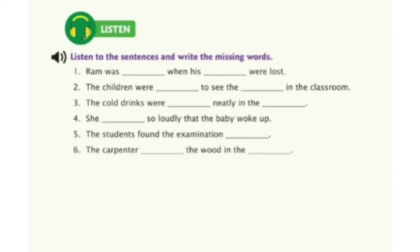Chapter name: Treasure Map. Listen to the sentences and write the missing words. One: Ram was young when his ice skates were lost. Two: The children were excited to see the movie in the classroom. Three: The cold drinks were kept neatly in the fridge. Four: She shouted so loudly that the baby woke up. Five: The students found the exam easy. Six: The carpenter cuts the wood in the forest.